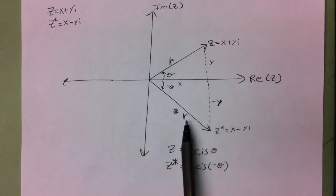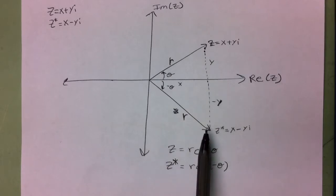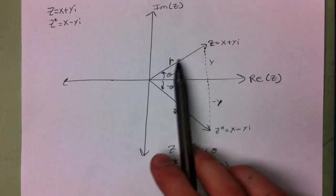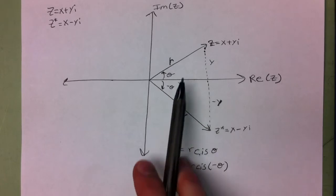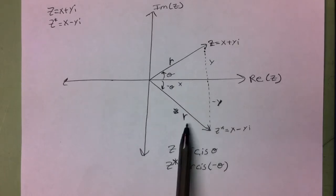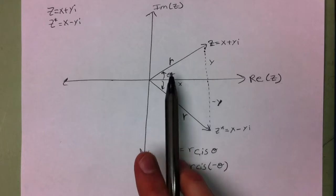One thing we discussed was that when you take the conjugate of a number, the length of the complex number stays the same. So z-conjugate has modulus r, just like z has modulus r.